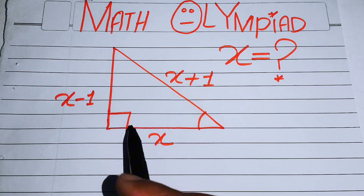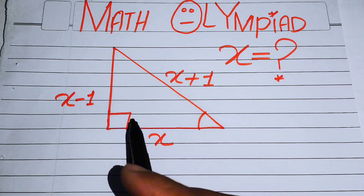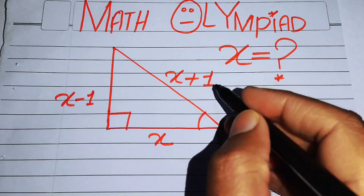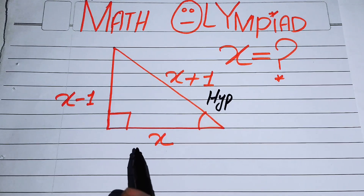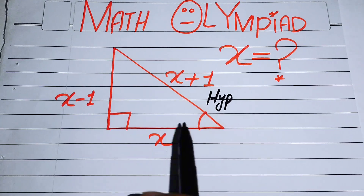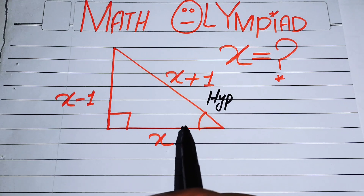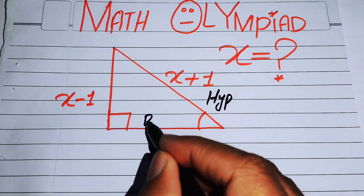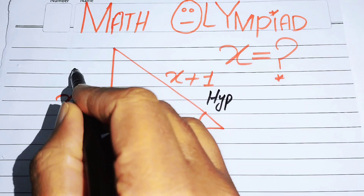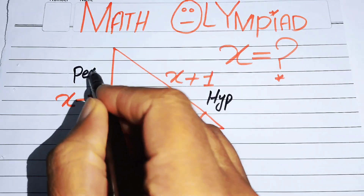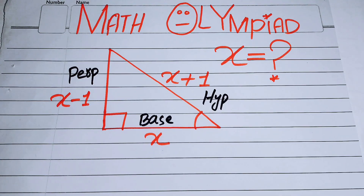The side opposite to the right angle is known as the hypotenuse. The side joined by the 90-degree angle and the other angle is known as the base, and the remaining side is known as the perpendicular or altitude.